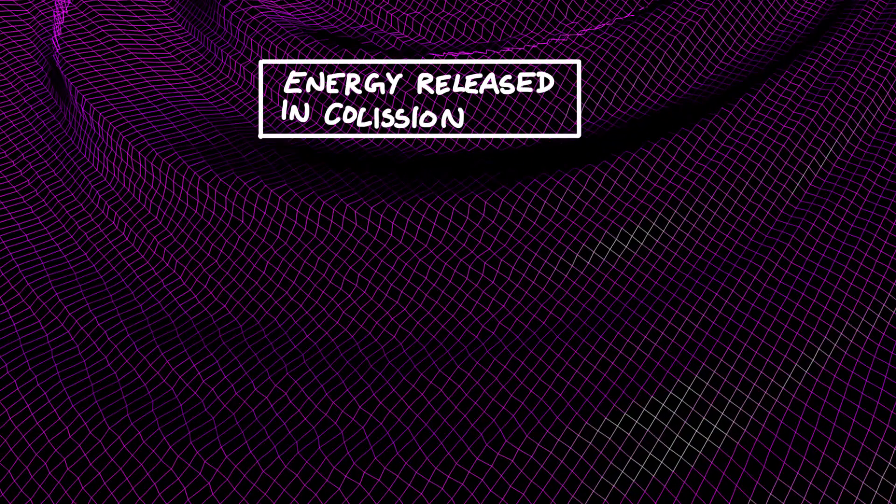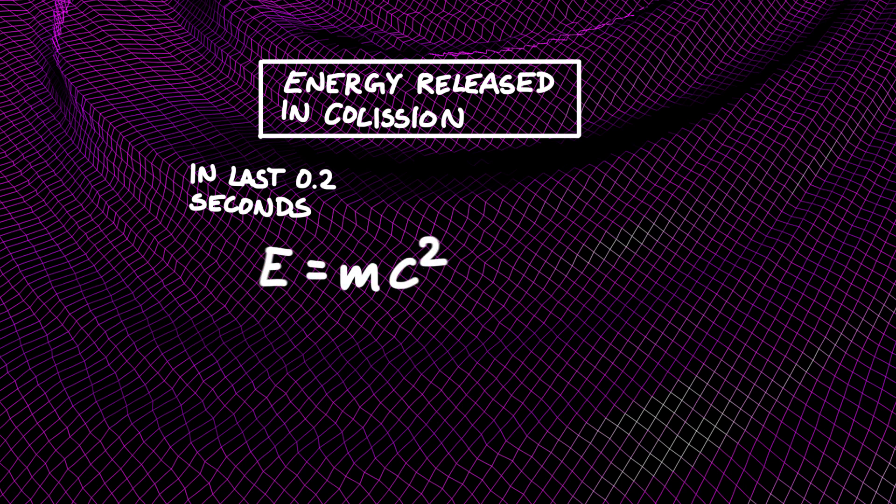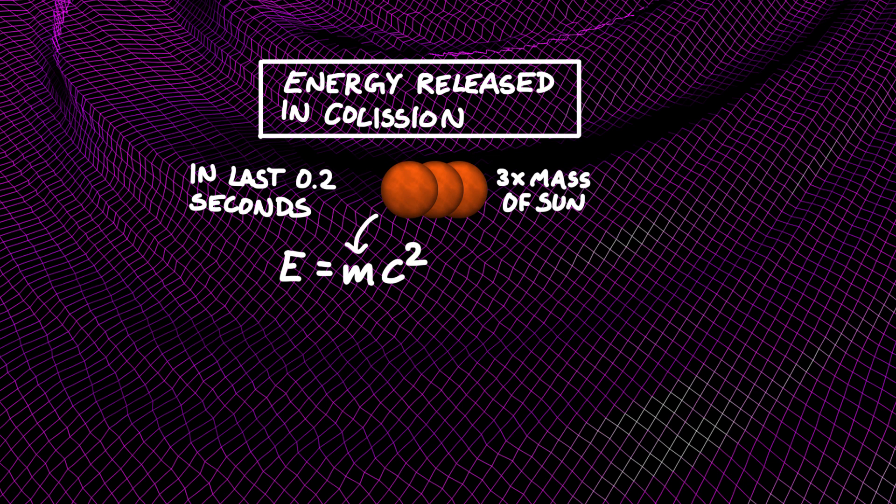And in the collision, they turned a huge amount of mass into gravitational wave energy. They lost a mass equal to three times the mass of the Sun, which got turned into gravitational wave energy by Einstein's equation, E equals mc squared.